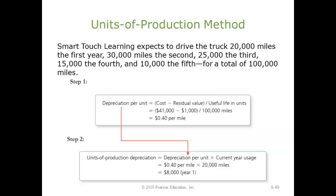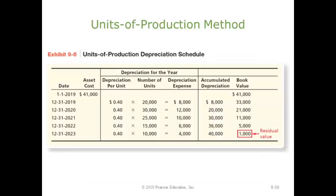So I've got $41,000 minus $1,000 divided by 100,000 miles, coming up with about 40 cents a mile. Now my units of production depreciation for the first year: I take my depreciation per unit of 40 cents and multiply that times the current year usage of 20,000 miles. So 40 cents times 20,000 miles comes out to $8,000 for the year. For each of the five years, the depreciation per unit doesn't change, but the number of units driven during the year definitely changes.